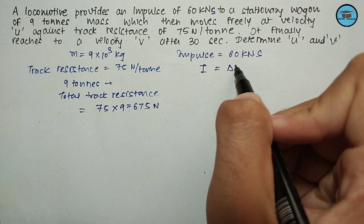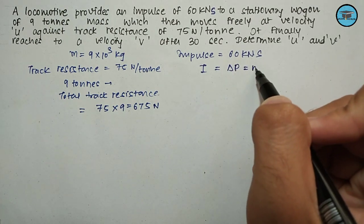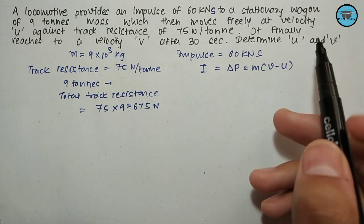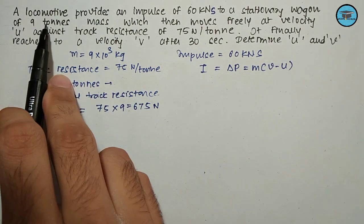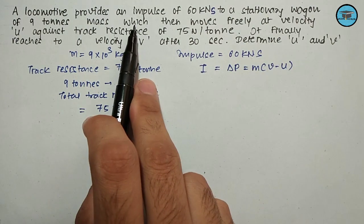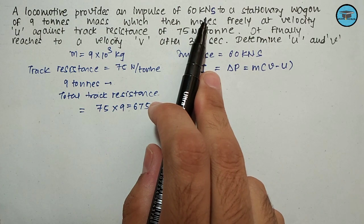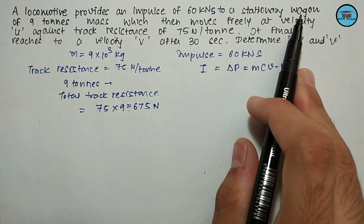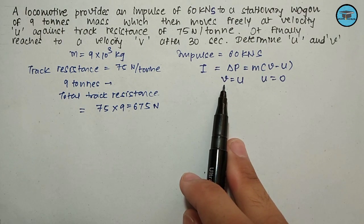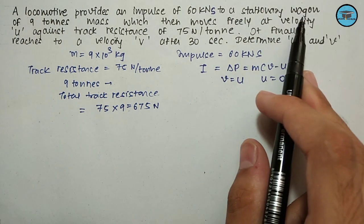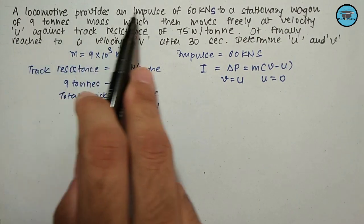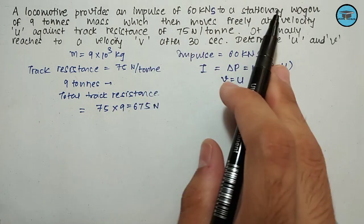Now we know that impulse is change in momentum, that is M(V - U). Here V is U. Initially the wagon is at rest, but after providing an impulse of 60 kilonewton-second, the velocity reached is U. Here V equals U and initial U equals zero since the wagon is stationary.